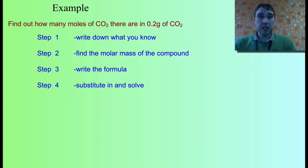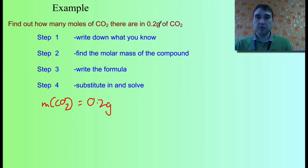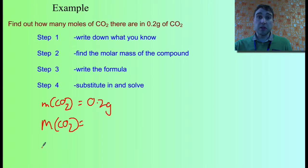The question says: find out how many moles of carbon dioxide there are in 0.2 grams of carbon dioxide. First, write down what you know. We know the mass of carbon dioxide — little m(CO₂) — equals 0.2 grams, because that's what we're told in the question. The other thing we can always find is the molar mass. We grab a periodic table and find the molar mass of the substance.